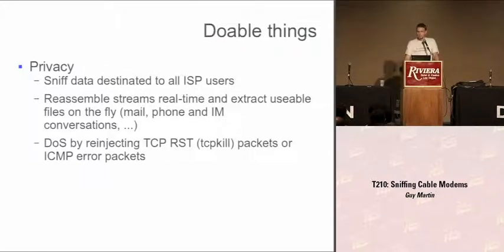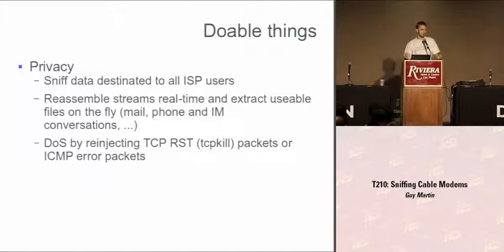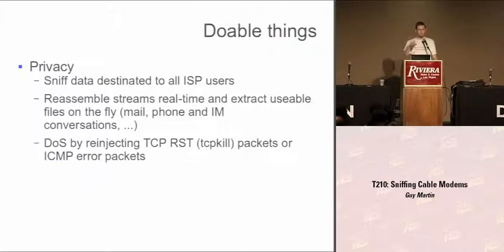What you can do: first, privacy. You can sniff all the data. Sniffing all the data gives you, say, five megabytes per second of traffic — it's huge. So you need to sort it out and say, I want this part of the traffic. You'll probably use Wireshark first to analyze the traffic and find which IP addresses are used for voice, which for other stuff. Then you build your rules, build your targets, and it will do whatever you like.